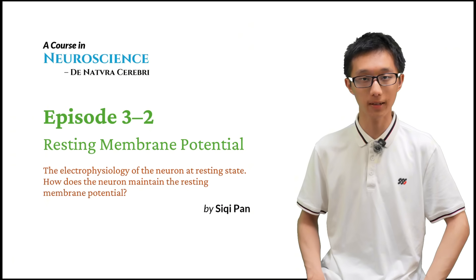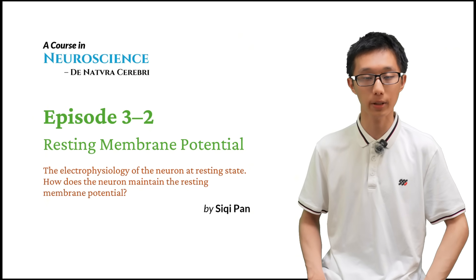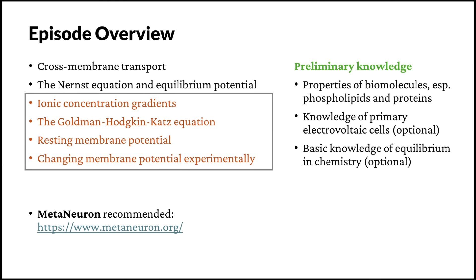Hi everyone, welcome back to the second portion of episode 3: resting membrane potential. In the last episode, we discussed cross-membrane transport and the Nernst equation and equilibrium potential of single ions. In this episode, we are first going to look at the values of the concentration gradients of some ions, then turn to the multi-ion case — the Goldman-Hodgkin-Katz equation. Finally, we will calculate the resting membrane potential and see how we can change the membrane potential experimentally. The software Metaneuron is recommended to try out the concepts of permeability and resting membrane potential by yourself.